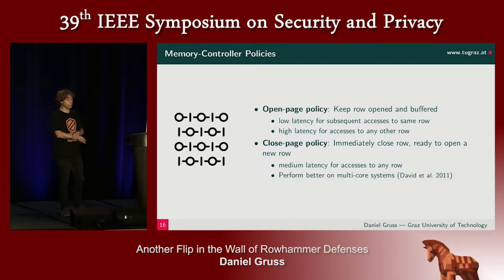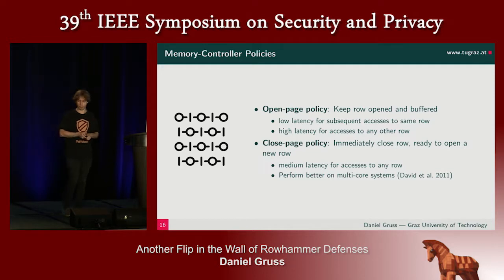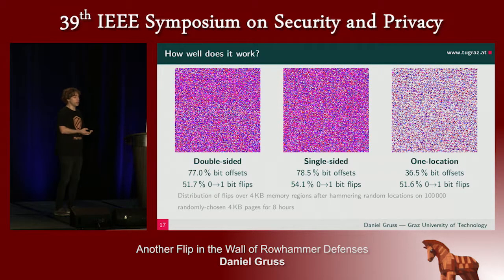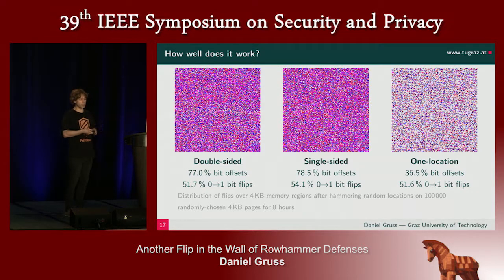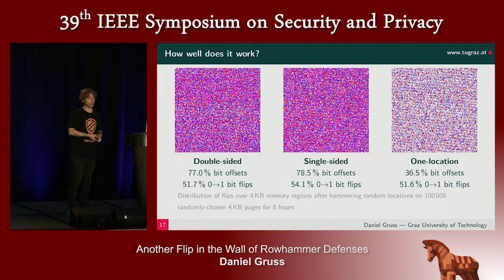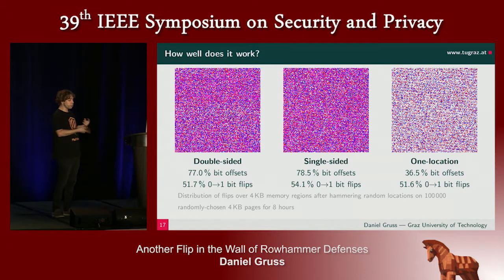It has been found that closed page policy performs better on multi-core systems because memory accesses from different cores are usually not closely related. If we look at the bit flip distribution on a four-kilobyte page, you can see that most of the bit offsets are covered. We ran this test for only eight hours, but you can reach any bit offset on a four-kilobyte page with double-sided or single-sided hammering. With one-location hammering, the number of bit flips is just lower — that's why we only have 36% of the bit offsets covered after eight hours. The distribution of zero-to-one flips and one-to-zero flips is approximately the same for all methods.